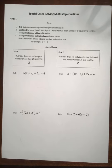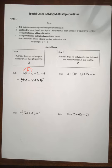Let's go through this example and use our skills for solving equations. We want to use the distributive property first. That gives me negative 5X minus 10, and I'm recopying the plus 5X equals 6.